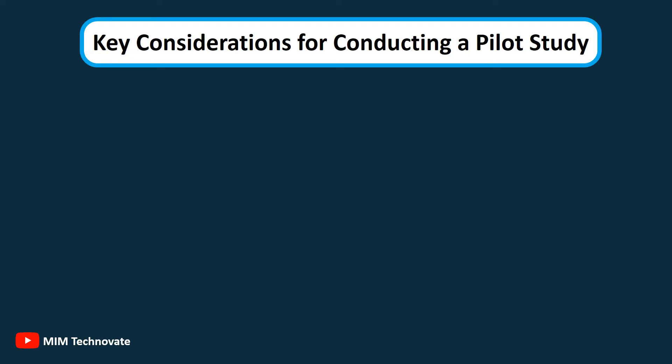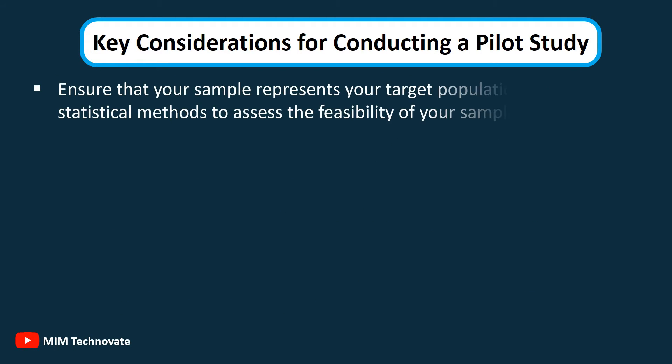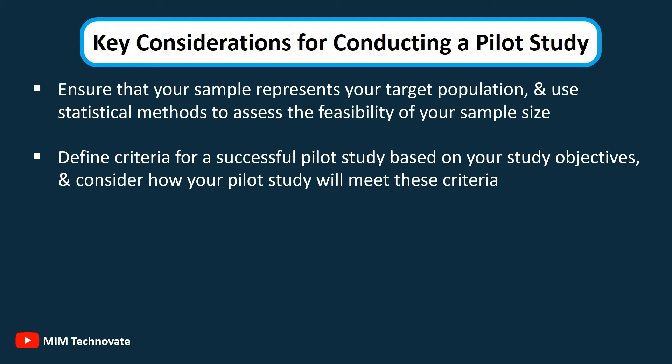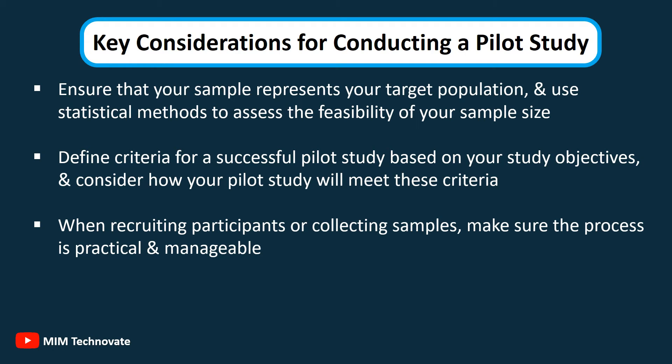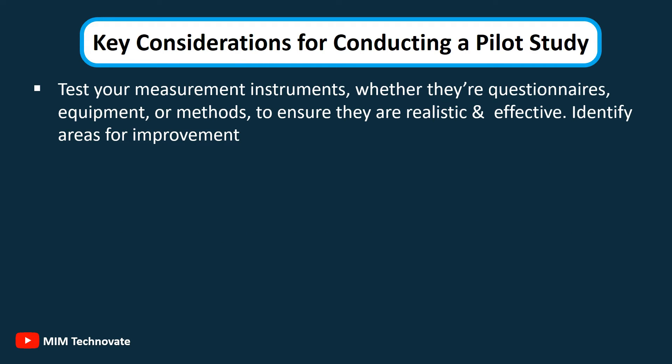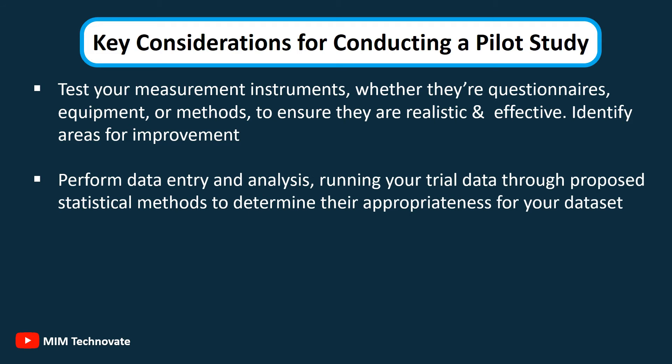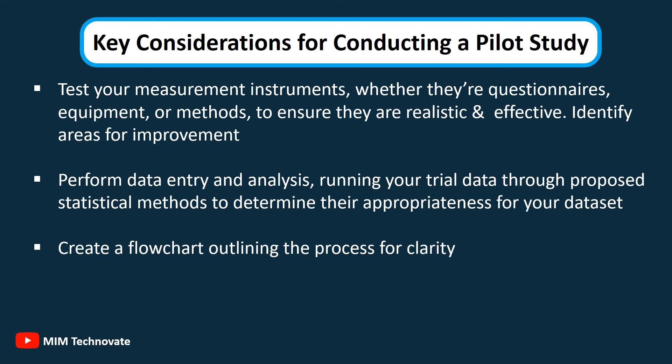Key Concentrations for Conducting a Pilot Study: Ensure that your sample represents your target population and use statistical methods to assess the feasibility of your sample size. Define criteria for a successful pilot study based on your study objectives. When recruiting participants or collecting samples, make sure the process is practical and manageable. Test your measurement instruments — whether questionnaires, equipment, or methods — to ensure they are realistic and effective. Identify areas for improvement, perform data entry and analysis, run your trial data through proposed statistical methods, and create a flowchart outlining the process for clarity.